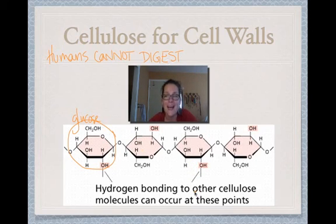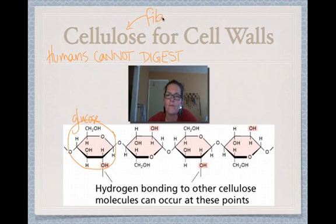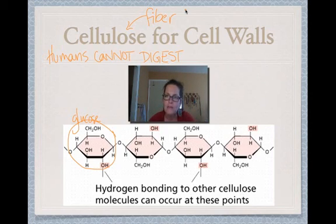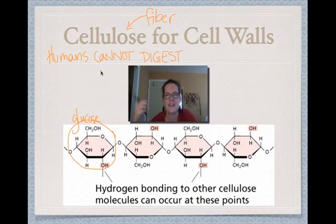Cellulose is a glucose monomer linked in a different way. If you were to eat a diet of nothing but grass, you couldn't break it down — you would starve to death and not get any energy from it. Cellulose is really important to eat because this is what we call fiber, and fiber is really good for cleaning out your intestines.